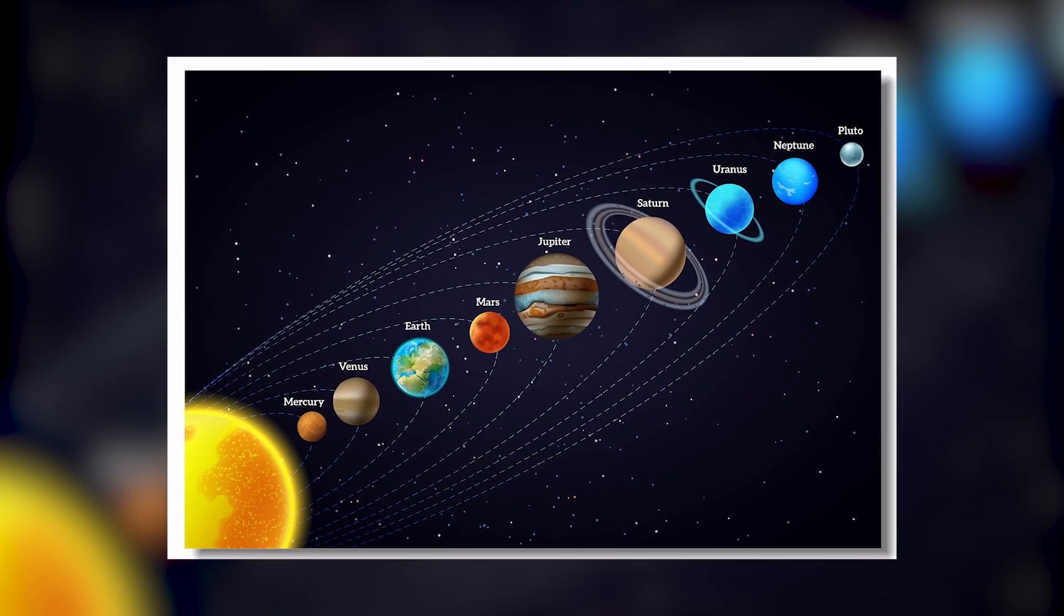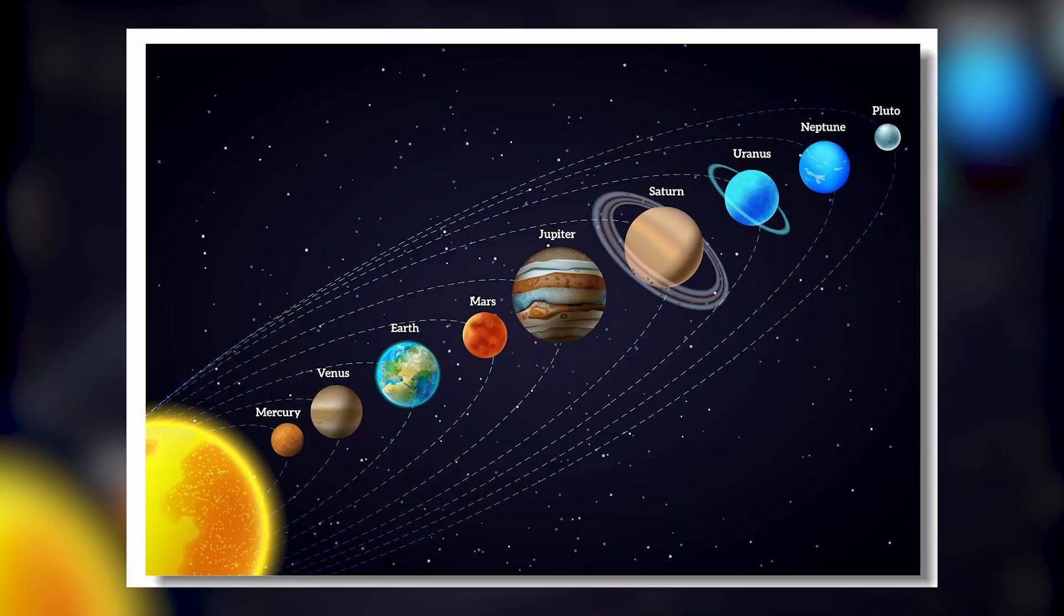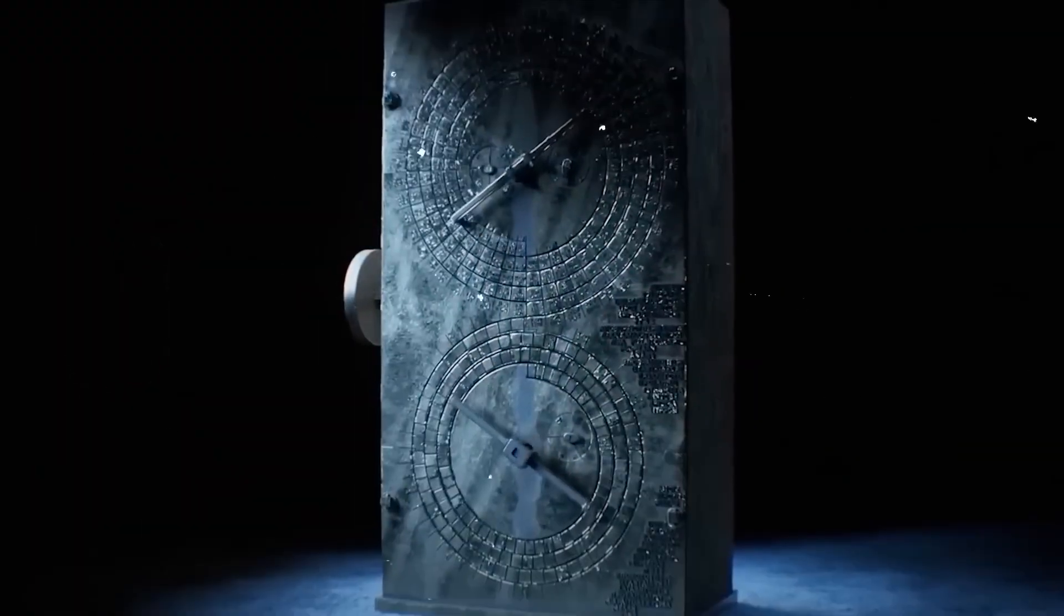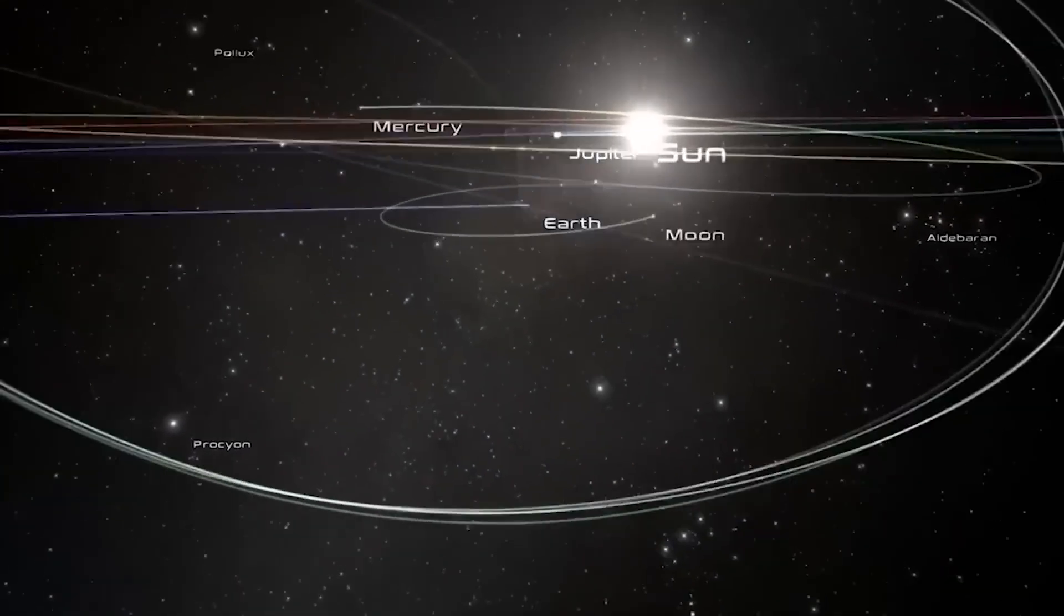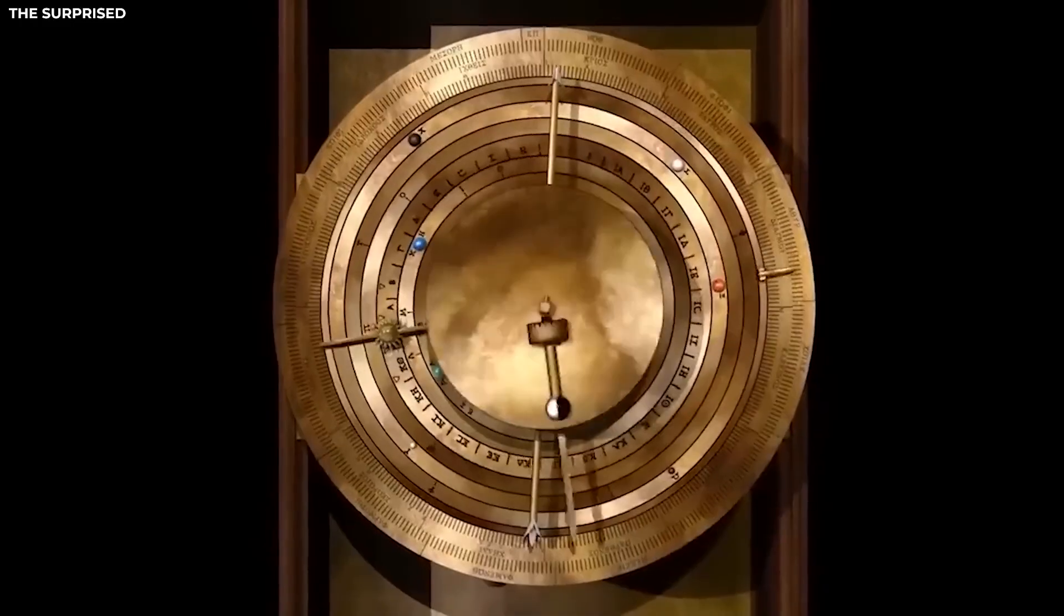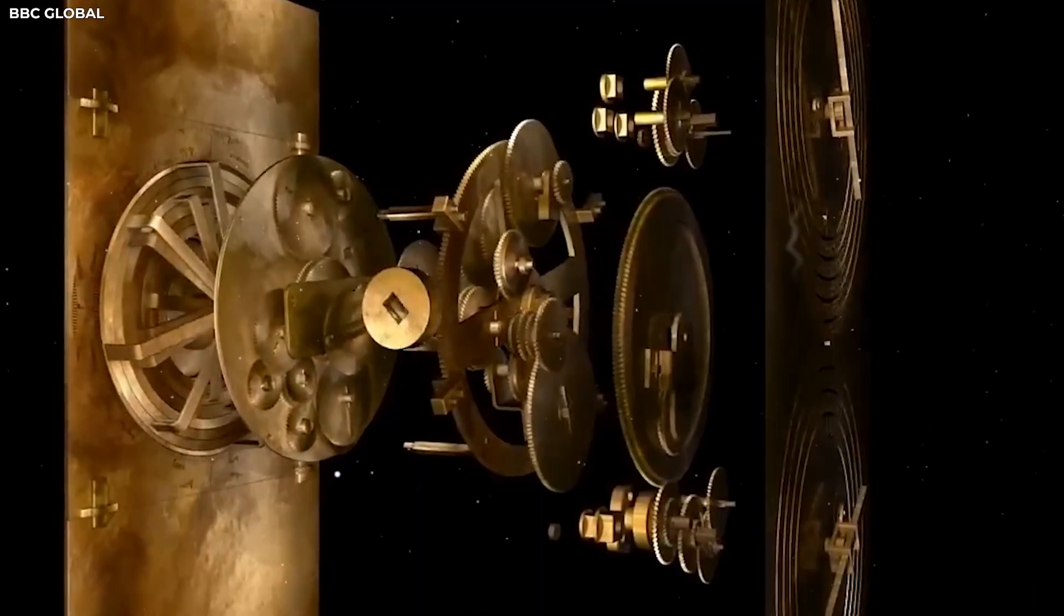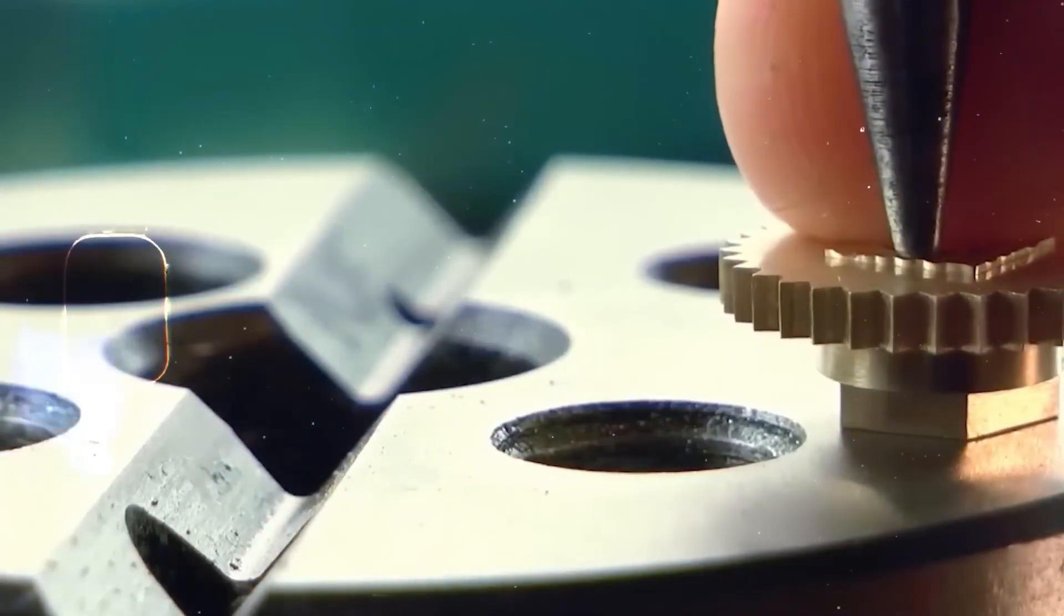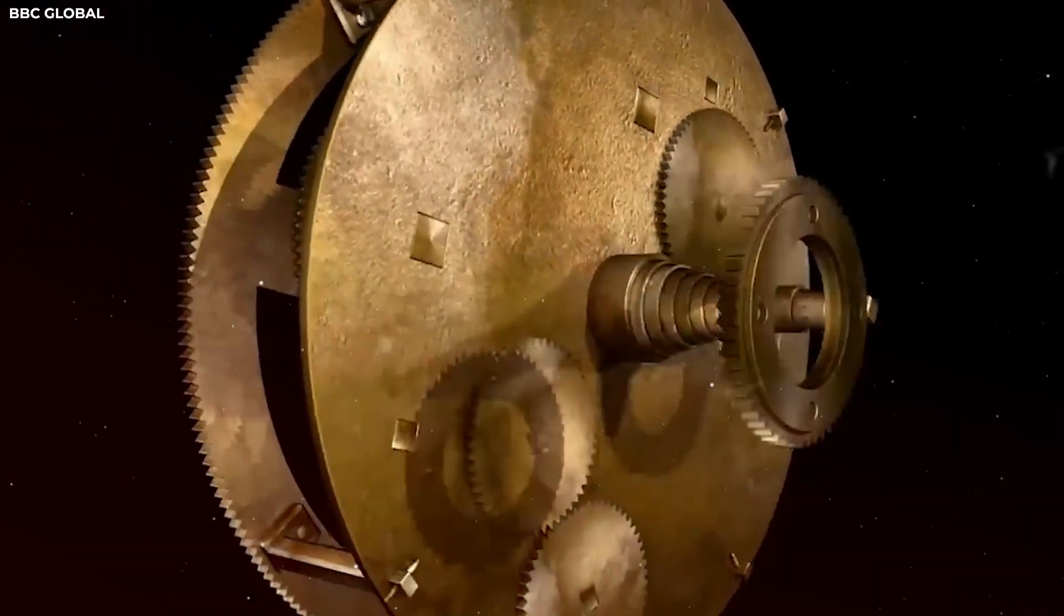They mentioned the known planets of the ancient world: Mercury, Venus, Mars, Jupiter, and Saturn—not as myths or symbols, but as moving parts in a grand mechanical model of the heavens. The ratios engraved on the front plates were stunning in their precision: mathematical descriptions of planetary orbits so accurate they rivaled models built over a millennium later. It suggested that the ancients didn't just track the stars—they recreated their motion in bronze.